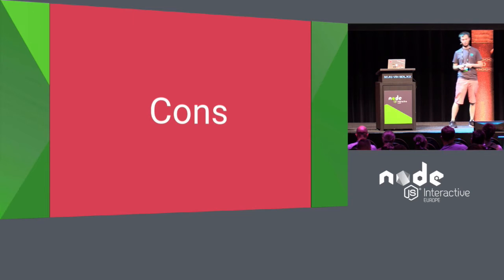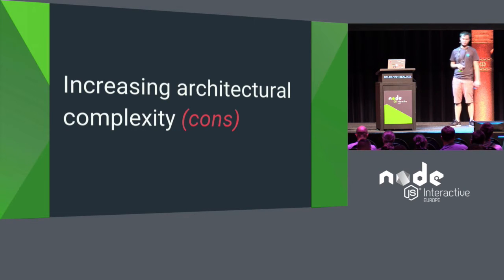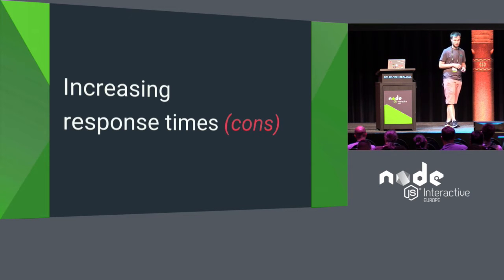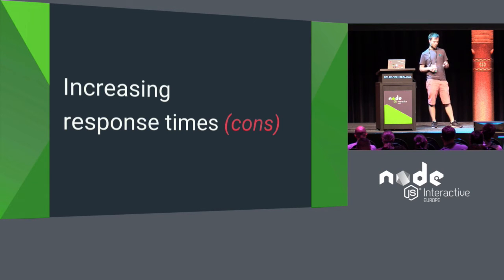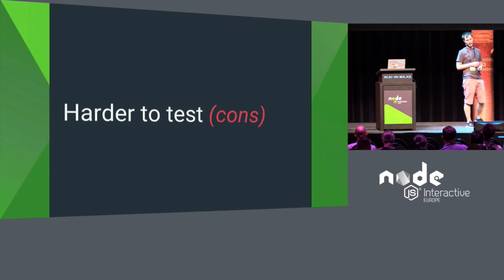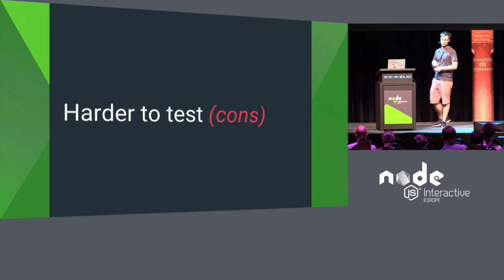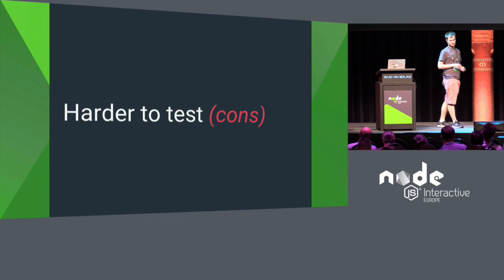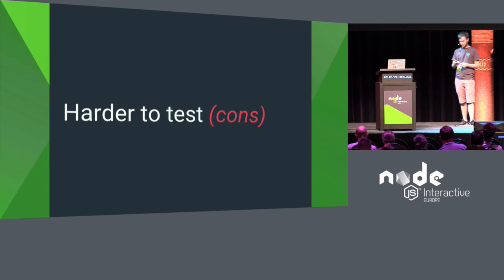Now for the cons — I like these better because cons can always be improved. First, increasing architectural complexity: more services communicating over the network makes it hard to figure out what broke. Second, increasing response times: network communication is slower than in-memory calls, and putting more services in a synchronous call chain makes your application slower. Third, harder to test: a monolith is one application you can start with your databases, but with microservices you need multiple other services, so you need to mock them or find ways to test them together.